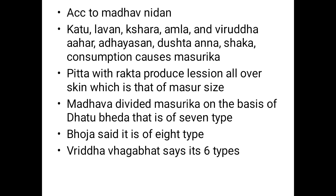Madhav divided Masurika on the basis of Dhatu Bheda — it is of 7 types. Bhoja said it is of 8 types. Vridha Bhagavata says it is of 6 types.